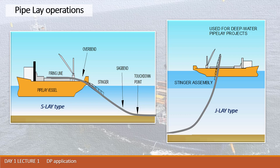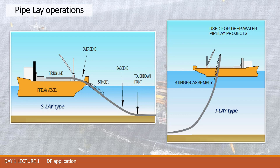In S-lay type, the stinger is placed at the stern of the vessel, and in such a case the pipe is not overbent when it reaches down to the sea bottom at the final point. In J-lay, the stinger is placed over the side of the vessel, and the shape of the pipe when repeating the J letter also has an appropriate bending to keep the pipe not damaged during the pipe laying process.